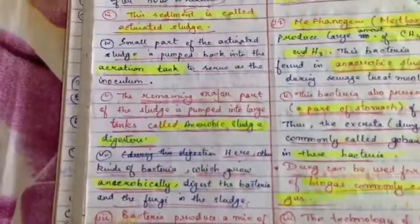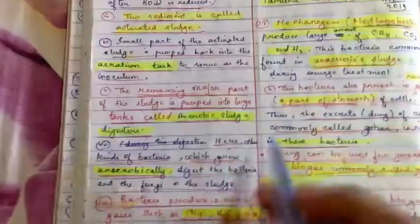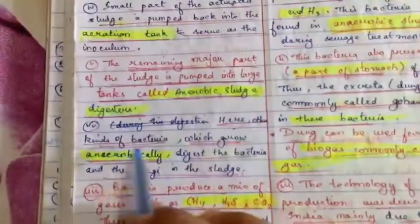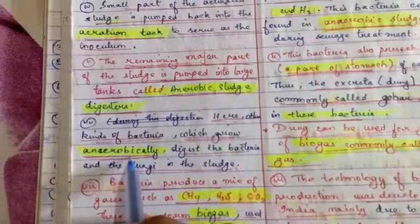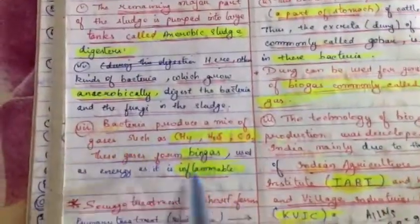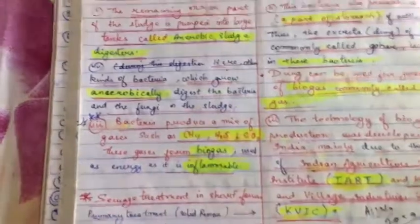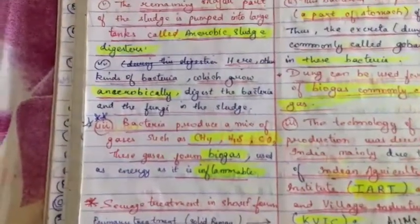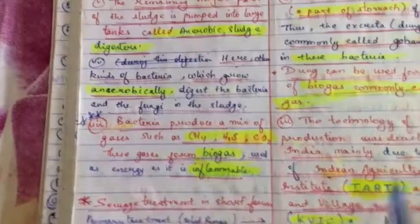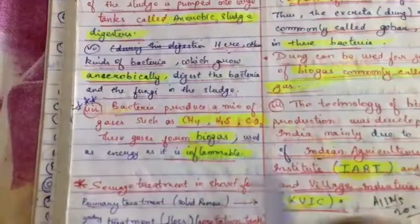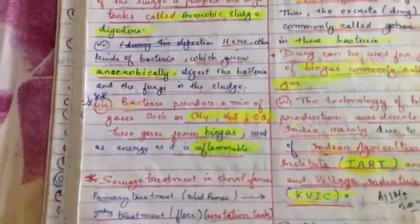The remaining major part of the sludge is pumped into a large tank called the anaerobic sludge digester. Here, other kinds of bacteria grow anaerobically and digest the bacteria and fungi in the sludge. These bacteria produce a mixture of gases such as CH4, H2, and CO2 — important. These gases form biogas and serve as an energy source as they are inflammable. Methanogens are involved in biogas production.